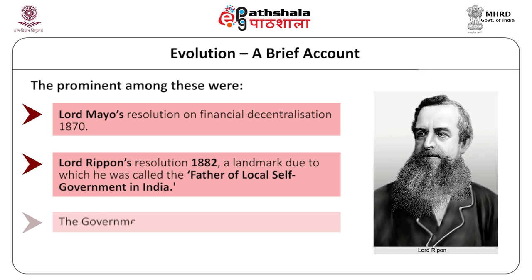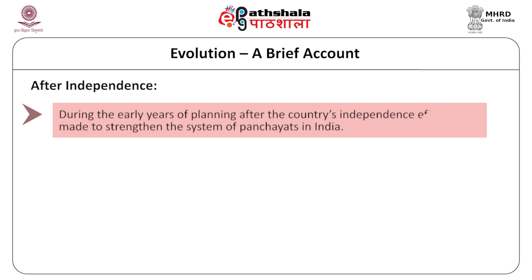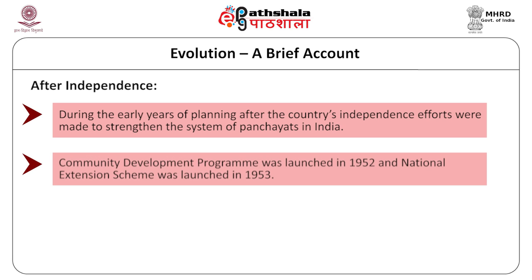The Government of India Acts of 1919 and 1935 also reference the local government in India. After independence, we adopted the planning process of development in the country, and the Community Development Programmes were launched in 1952. The National Extension Scheme was launched in 1953.